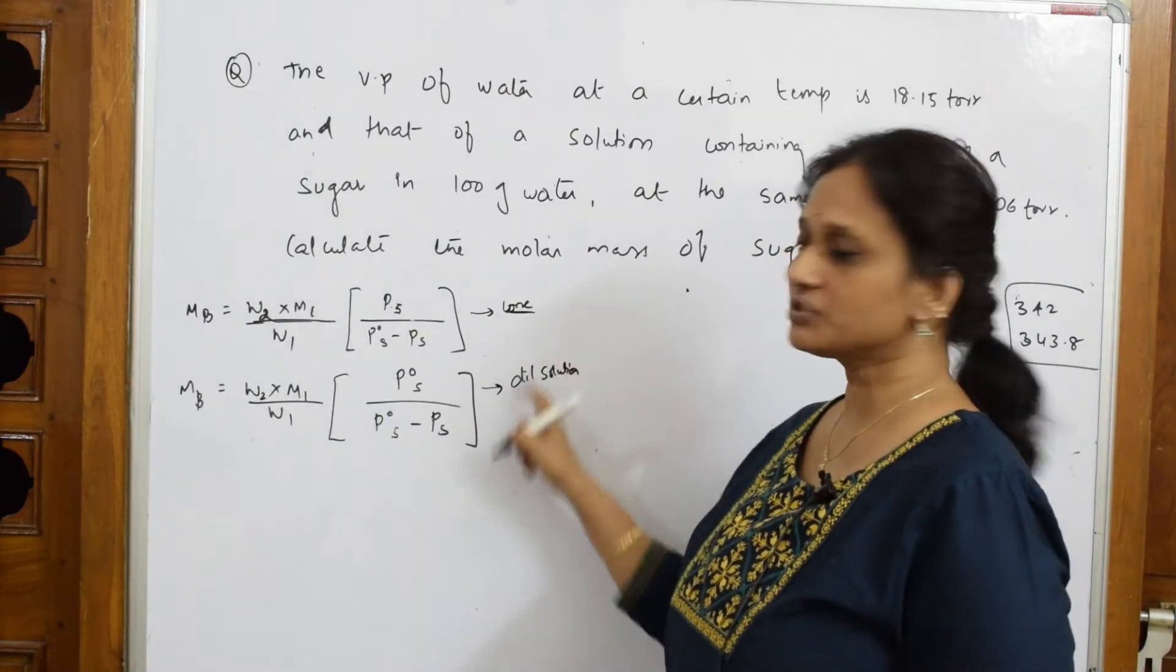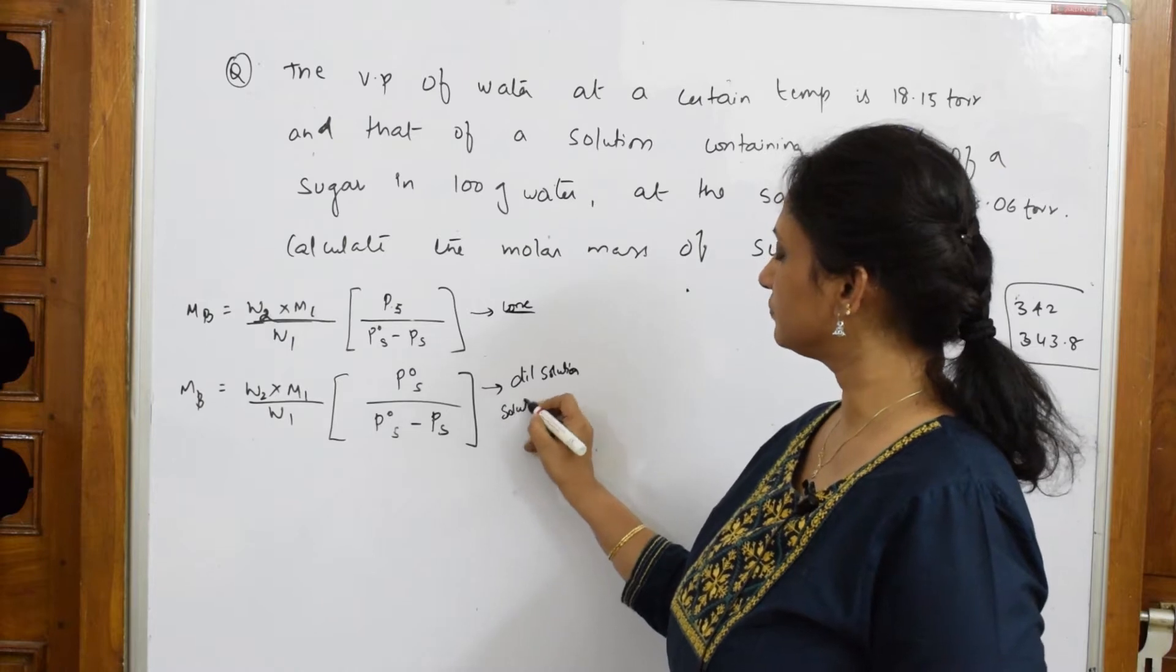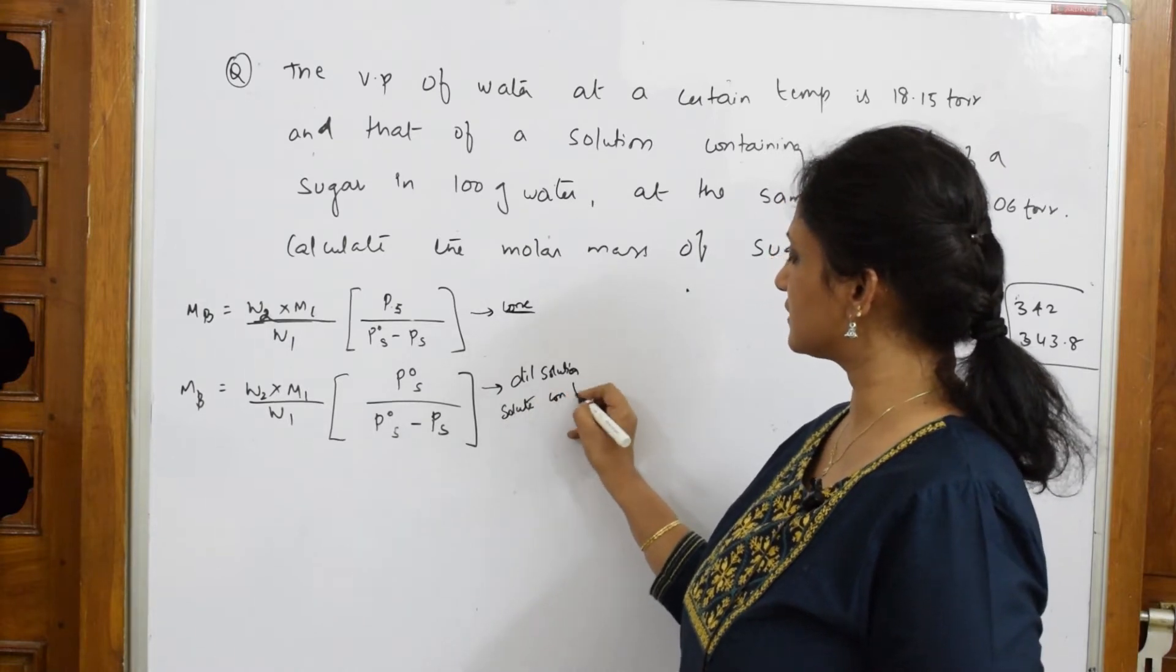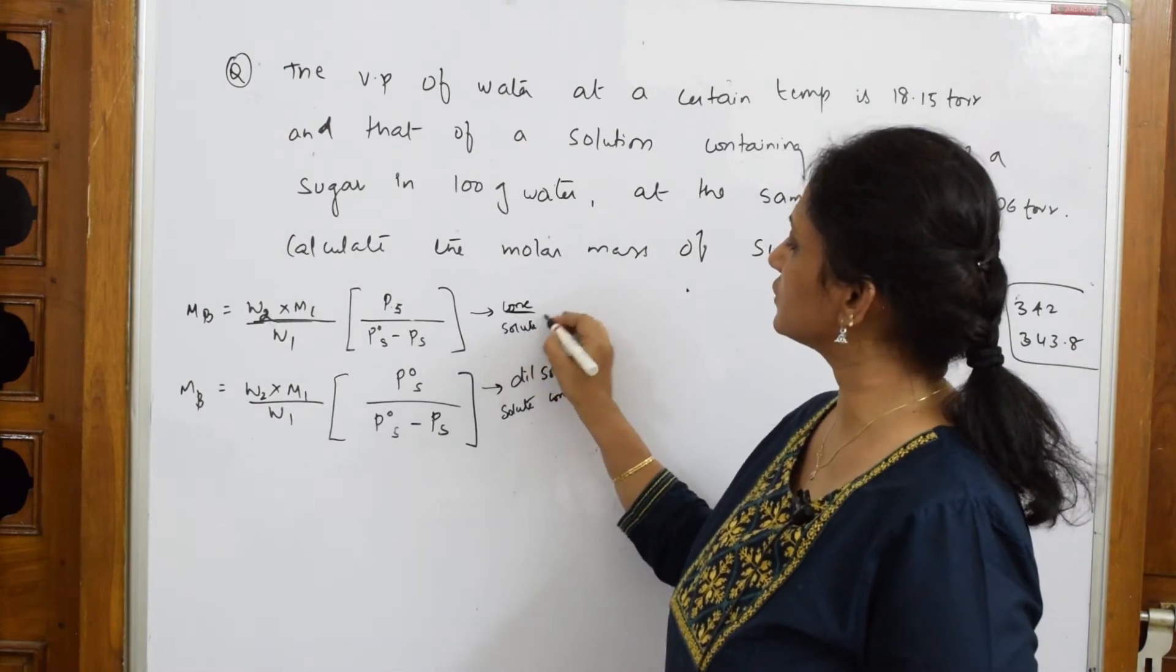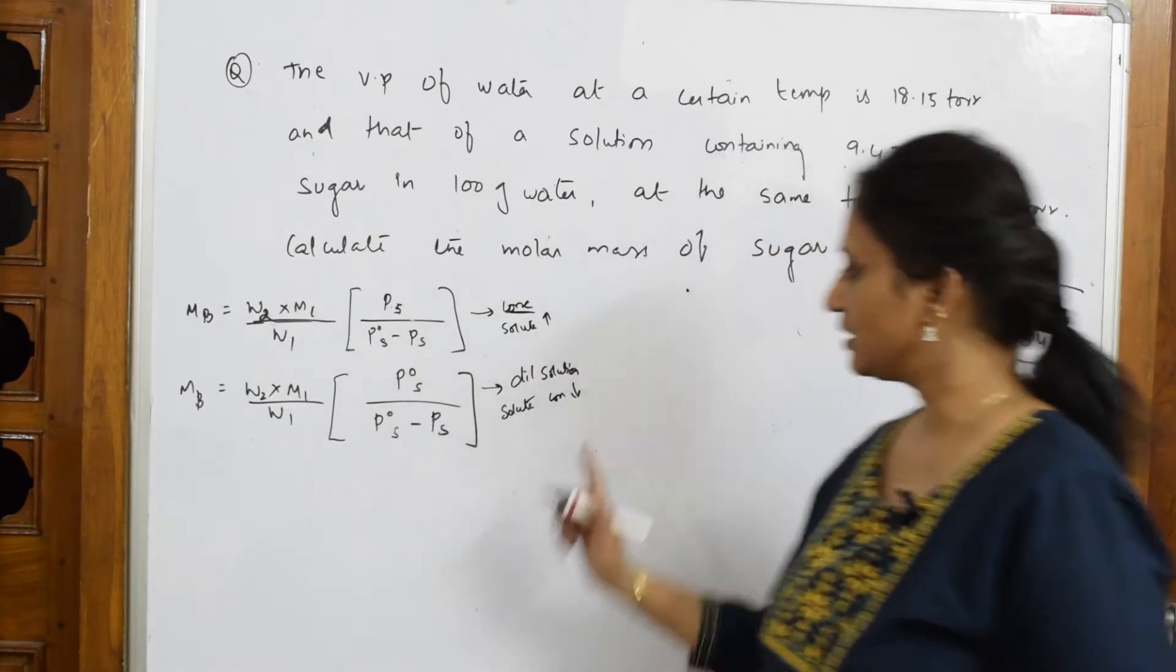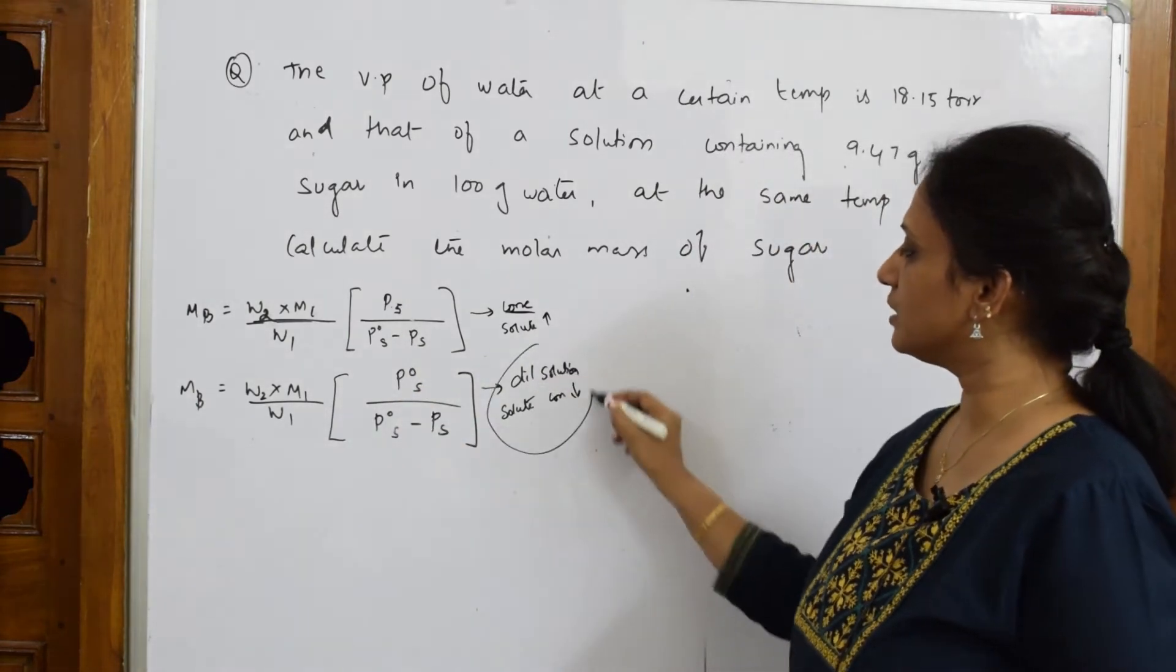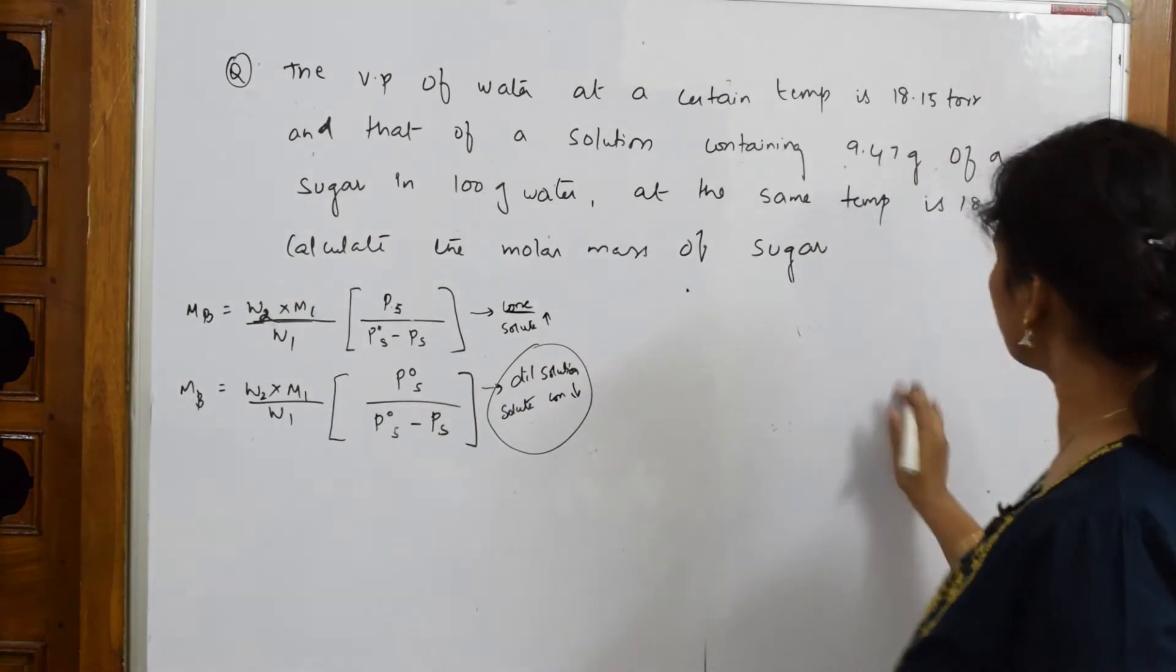What is the difference between these two? In dilute solutions, solute concentration is less; in concentrated solution, solute concentration is more. I've just framed it. Mostly you will be given this formula or this particular thing, and you can use it directly. Let us see the first one.